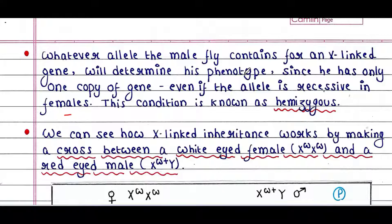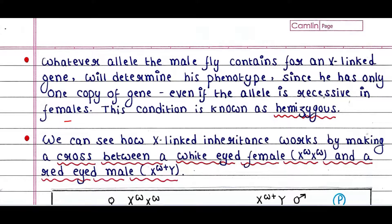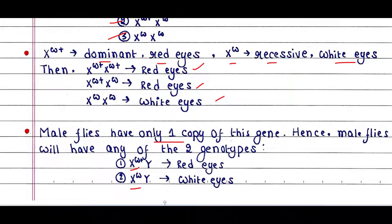Whatever allele the male fly contains for an X-linked gene will determine his phenotype, since he has only one copy of the gene — even if the allele is recessive in females. This condition is known as hemizygous. This male fly contains only one recessive allele Xw, and it shows the recessive phenotype because it has only one copy of the recessive gene, since it has only one X chromosome.